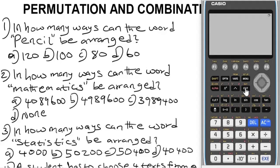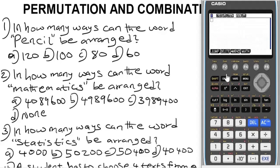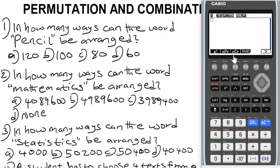The next thing I'm going to do is find the permutation and combination function on this calculator. To do that, press the MENU key, then press option. When you press option, press F6 to find probability. Press F3 for it. So we have factorial, permutation, and combination. We are going to work with these three functions on this calculator.